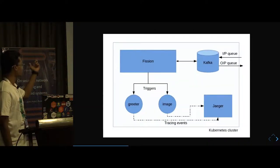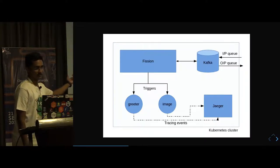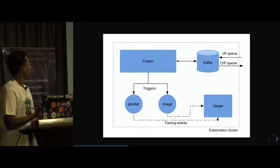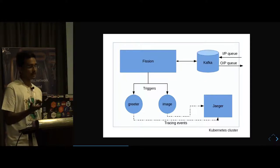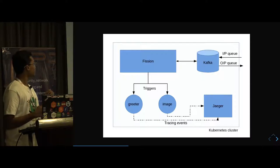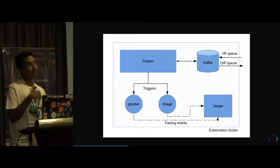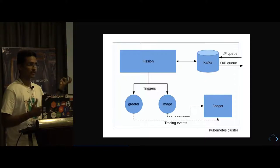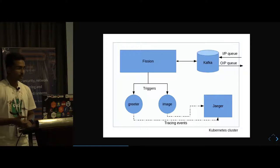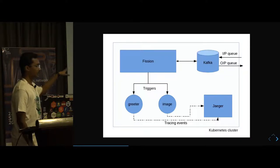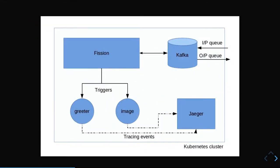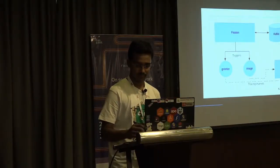Now we are introducing some new tools. One is Fission and the next is our tracing backend which is Jaeger. We have the greeter and image functions. When there is an input message in the input queue, Fission gets triggered and gives that message to your greeter function. It passes the output to Fission again and it is put to the next queue. The next queue triggers another function and the output is put in the output queue — all handled via Fission. At the bottom, tracing events are being sent to our tracing backend, Jaeger. We have instrumented our application code so it knows what to do when it receives a request: it creates tracing events which are sent to the Jaeger backend.